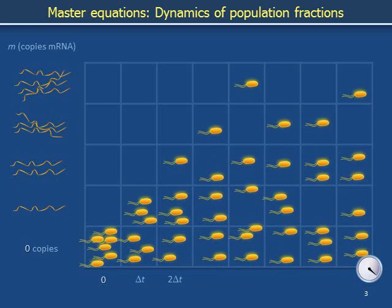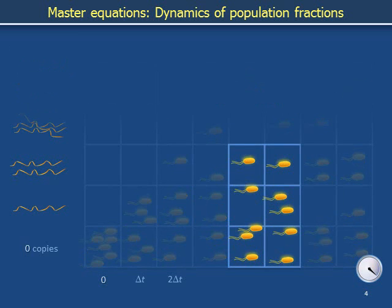For the purposes of this video, we are describing intervals of time during which the total number of cells remains constant. This diagram illustrates the dynamics of the population by positioning icons of cells in a checkerboard laid down across state space and time. To describe mathematically the pattern with which cells are arranged on this grid, we compare the numbers of cells in the light blue and dark blue boxes — that is, the number of cells that have m copies of messenger RNA at time t plus delta t to the number of cells with that same number m at a preceding time t. In this illustration, m happens to equal one copy of messenger RNA.